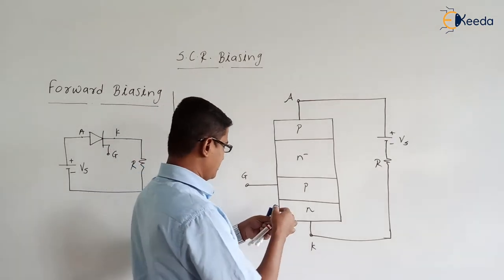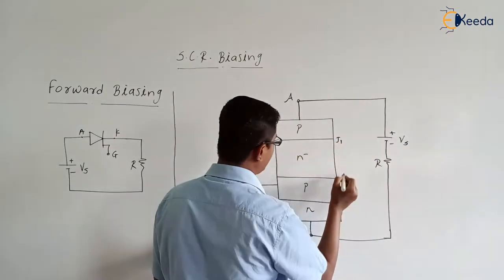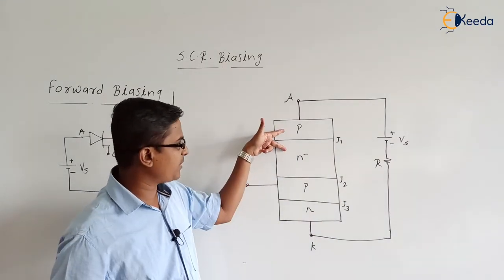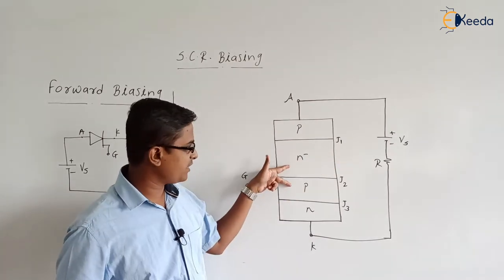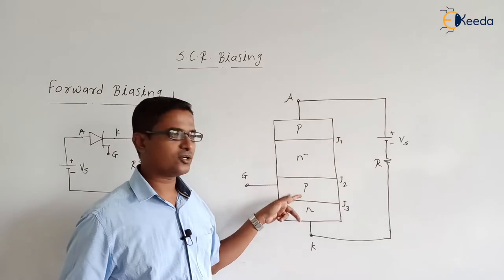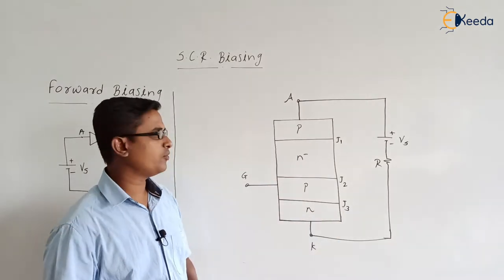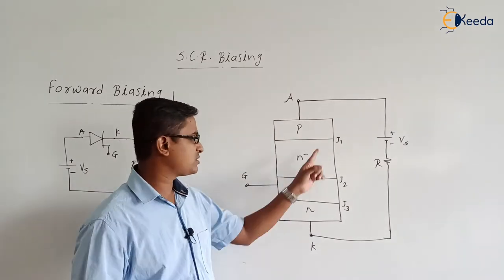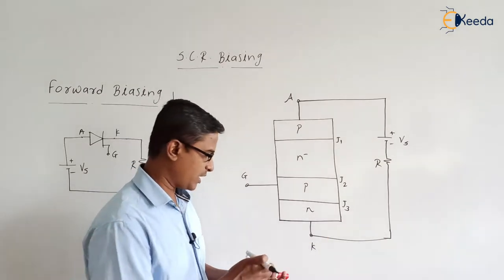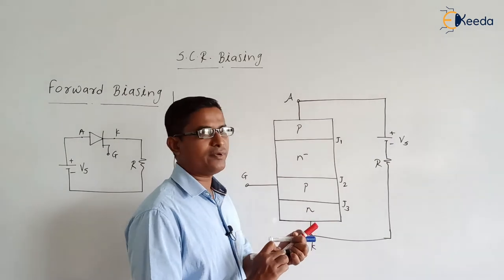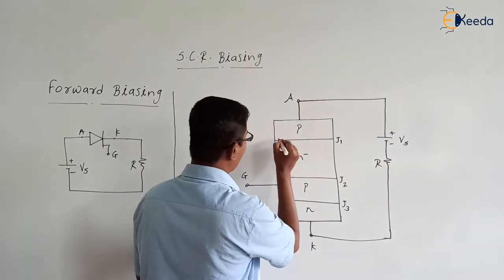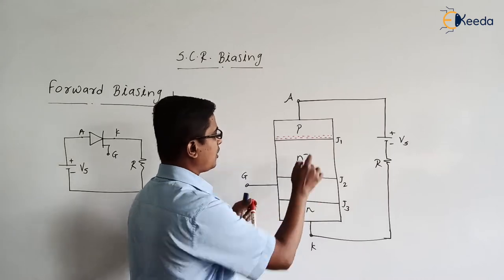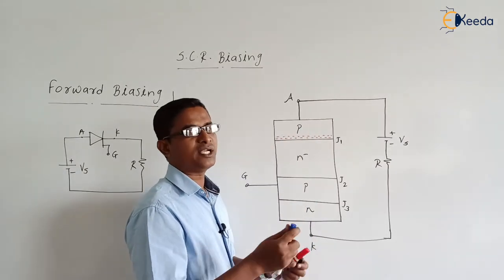As we know the P-type material has a large number of holes and very few electrons. When P-type and N-type materials are connected together, there will be a formation of a junction — similar to that of the PN junction diode. Across each PN junction there exists a depletion layer, so across the three junctions we have three depletion layers. At the P-side of each depletion layer we have a layer of negative charges, and at the N-side we have a layer of positive charges.